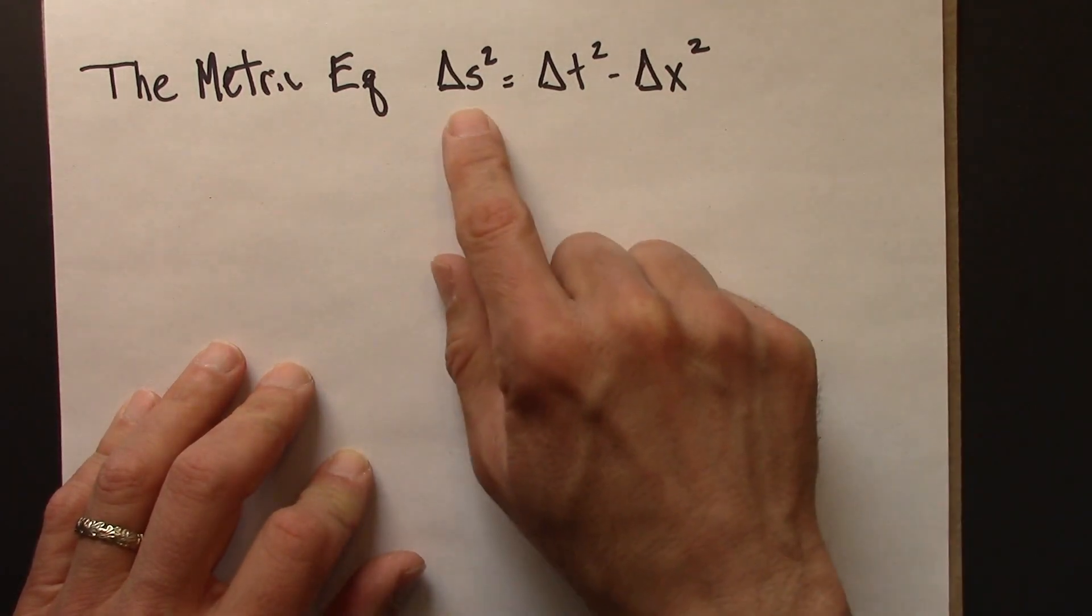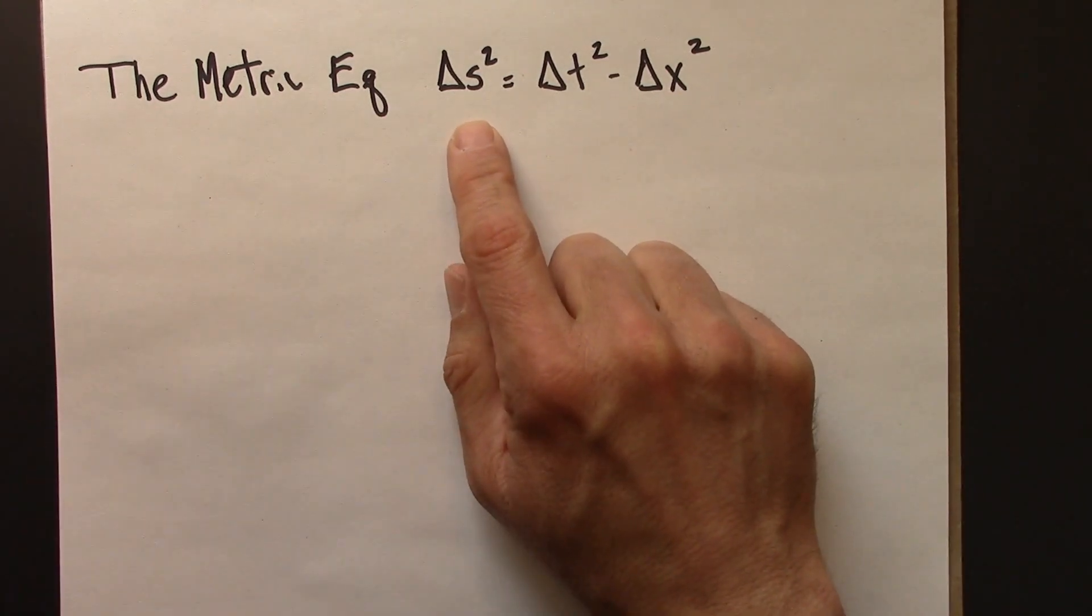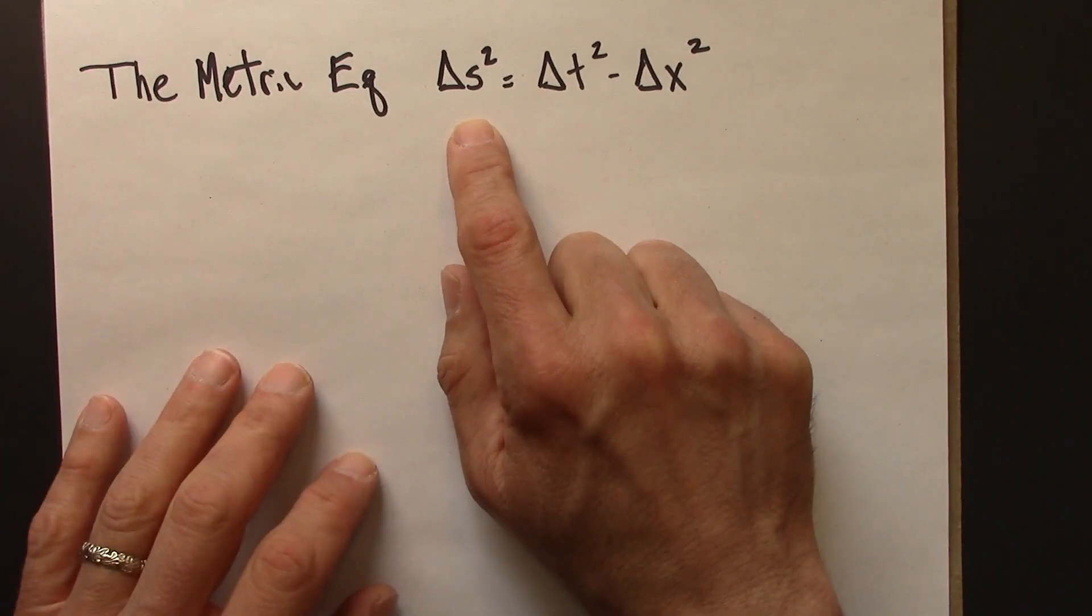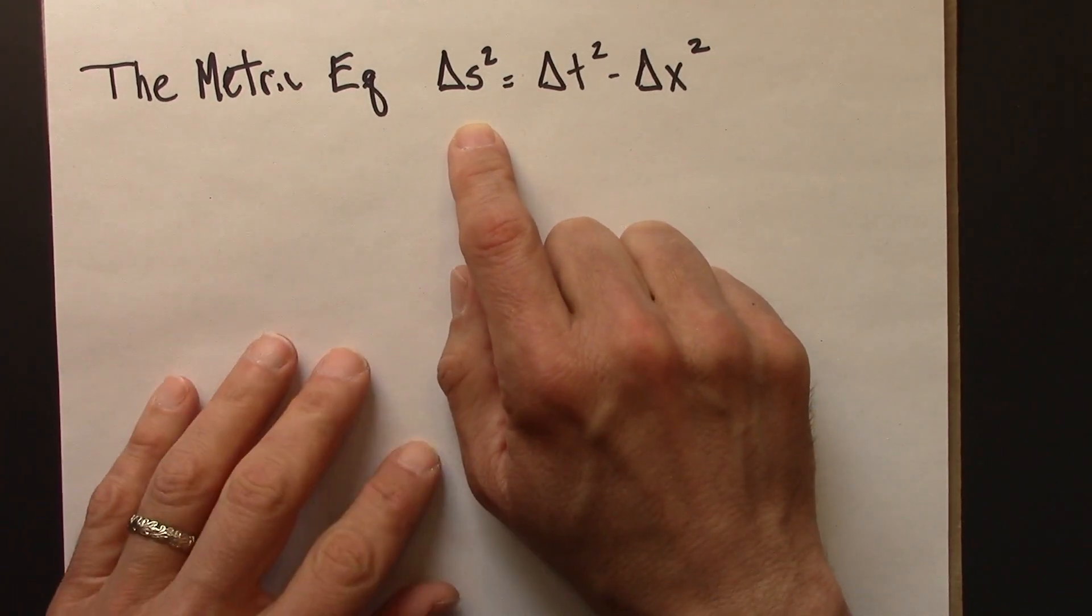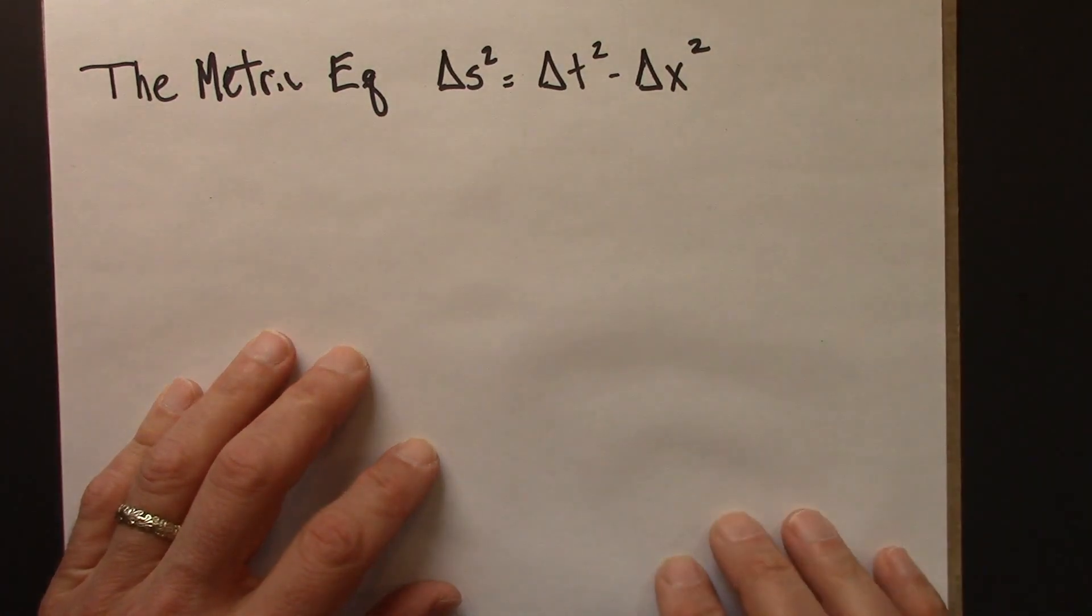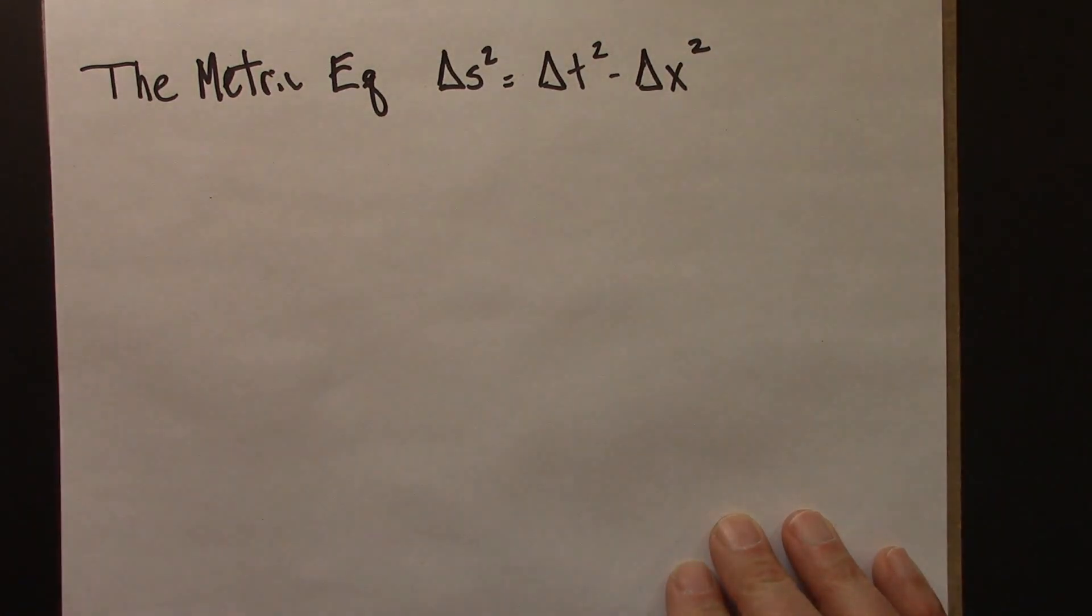So this is a very powerful and useful equation, and we can use it to figure out all sorts of things in special relativity. Let's illustrate that with an example. So I'll put the example on the screen so you can read it, and then we'll work through the solution together.